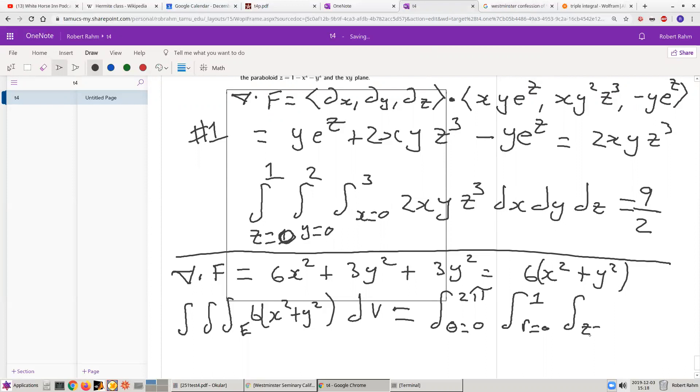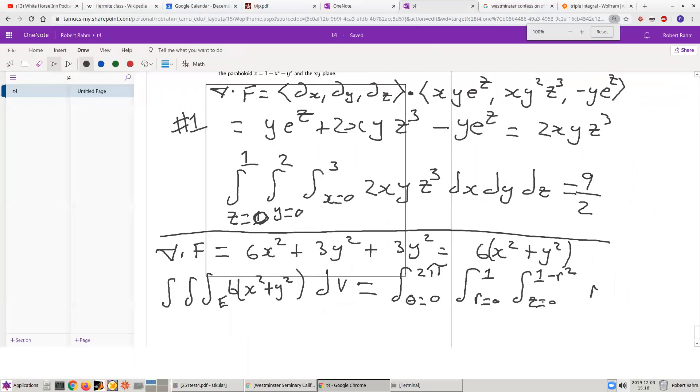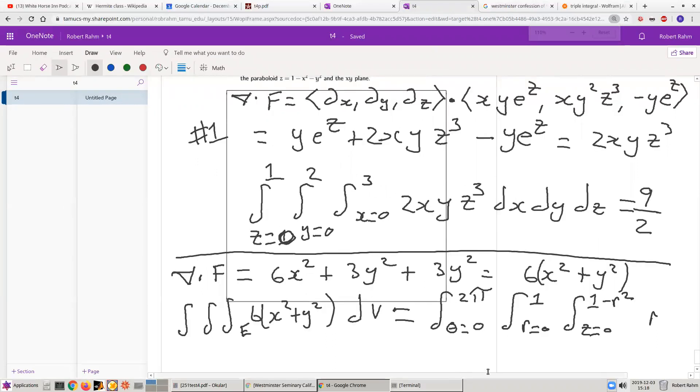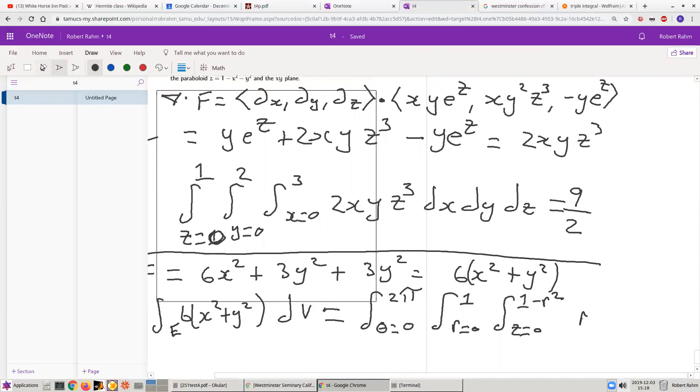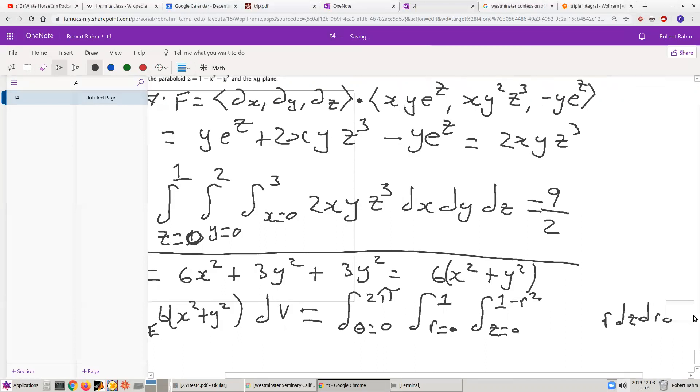Okay, and z is going to go from 0 to 1 minus r squared. Okay, don't forget the r. Don't forget the r. dz dr d theta. And now we multiply, we also have to include the function that we're integrating,